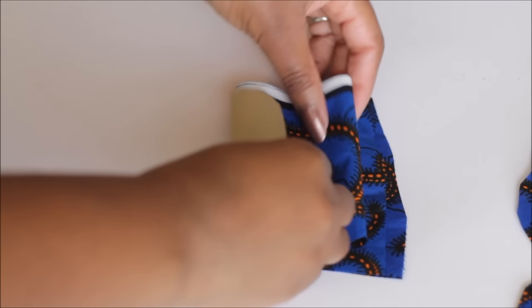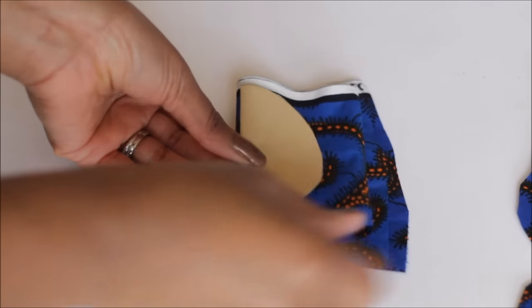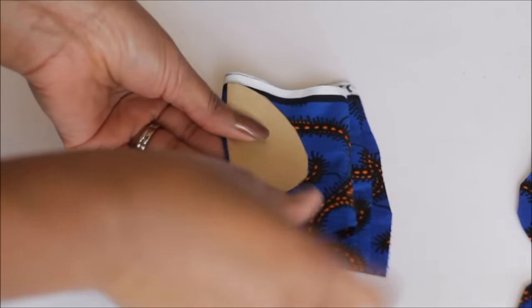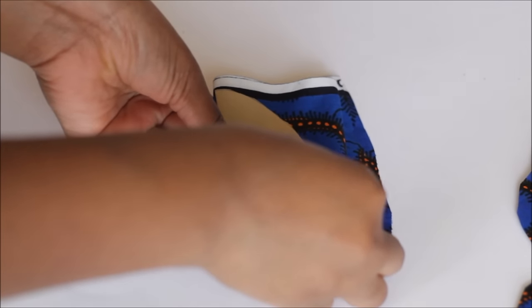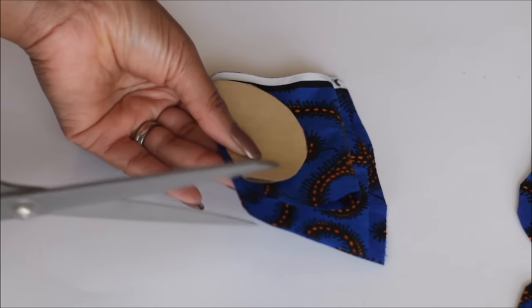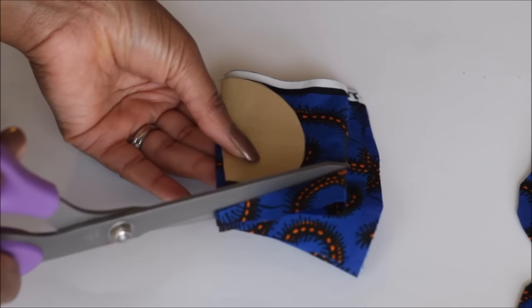After that, fold your fabric in half and fold it another time. So you will be folding it twice. Place your circle, actually fold that as well, and then place it on the fold of the fabric. Then cut out around your circle pattern.